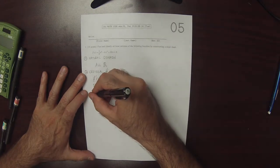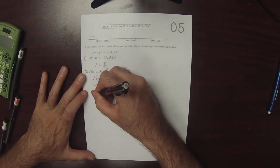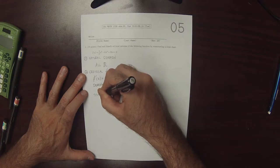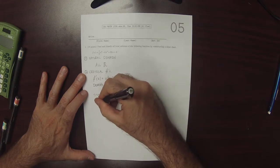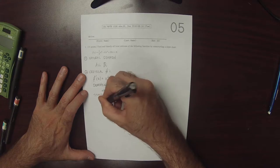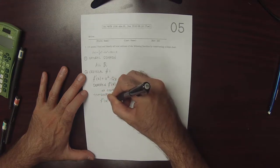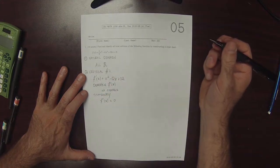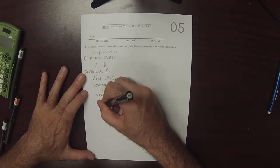And now we need to find the stationary points, which is to say we need to solve the derivative equal to zero. So in order to do that, we'll factor the derivative.